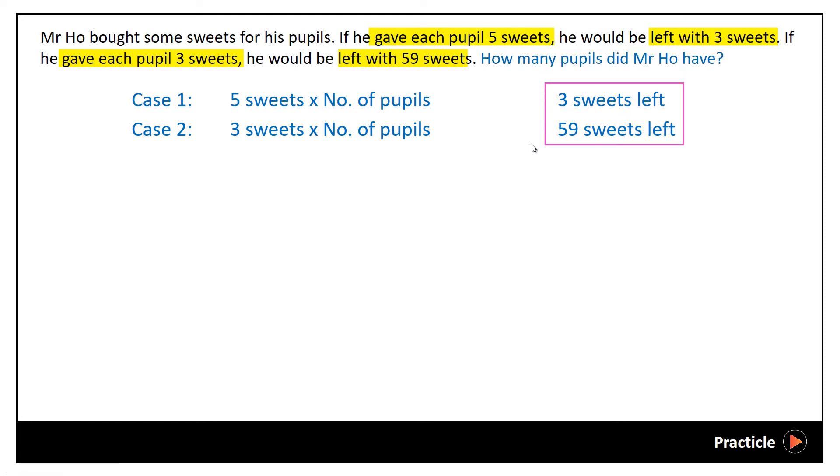Let's find the difference in the number of sweets left in case 1 and case 2. So we take 59 minus 3, which gives us a value of 56. Next, we find the difference between 5 sweets and 3 sweets, which gives us a value of 2.